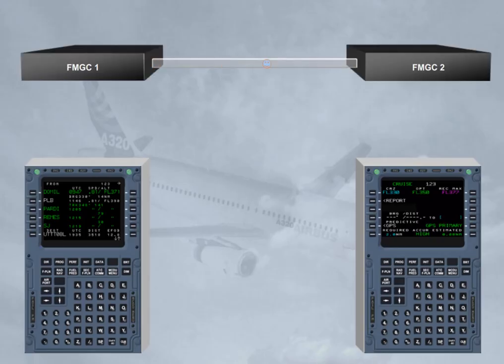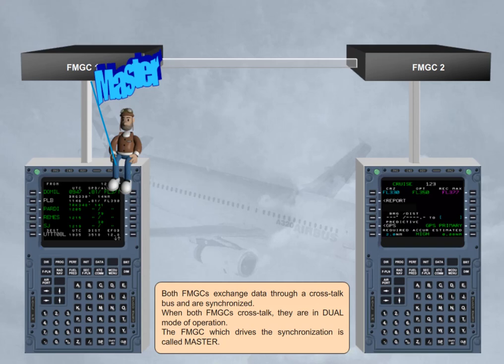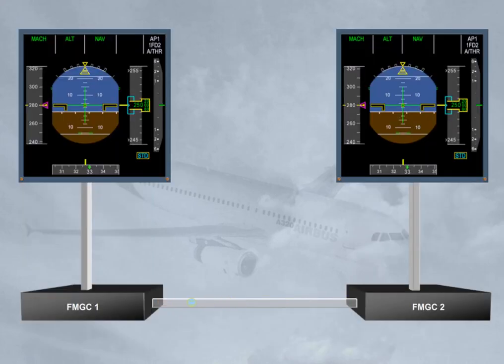Both FMGCs exchange data through a cross-talk bus and are synchronized. When both FMGCs cross-talk, they are in dual mode of operation. The FMGC which drives the synchronization is called master. The master FMGC is automatically determined by the engagement status of the Autopilot Flight Director. If Autopilot 1 is on, FMGC 1 is master. If Autopilot 2 is on, FMGC 2 is master. If Autopilot 1 plus 2 and/or Flight Director 1 plus 2 are on, FMGC 1 is master.